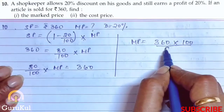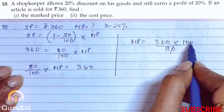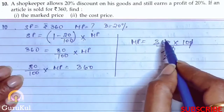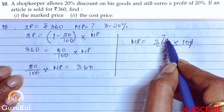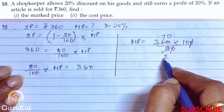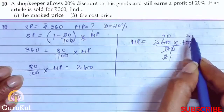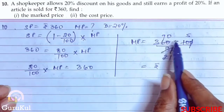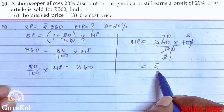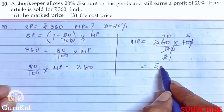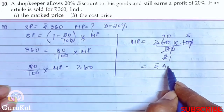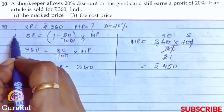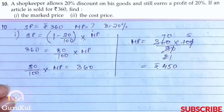Rearranging, 80/100 into MP equals 360. By cross multiplication, MP equals 360 into 100/80. After cancelling zeros, 90 into 5 gives us the marked price of rupees 450. So this was the first part of question number 10, where we needed to find the marked price.